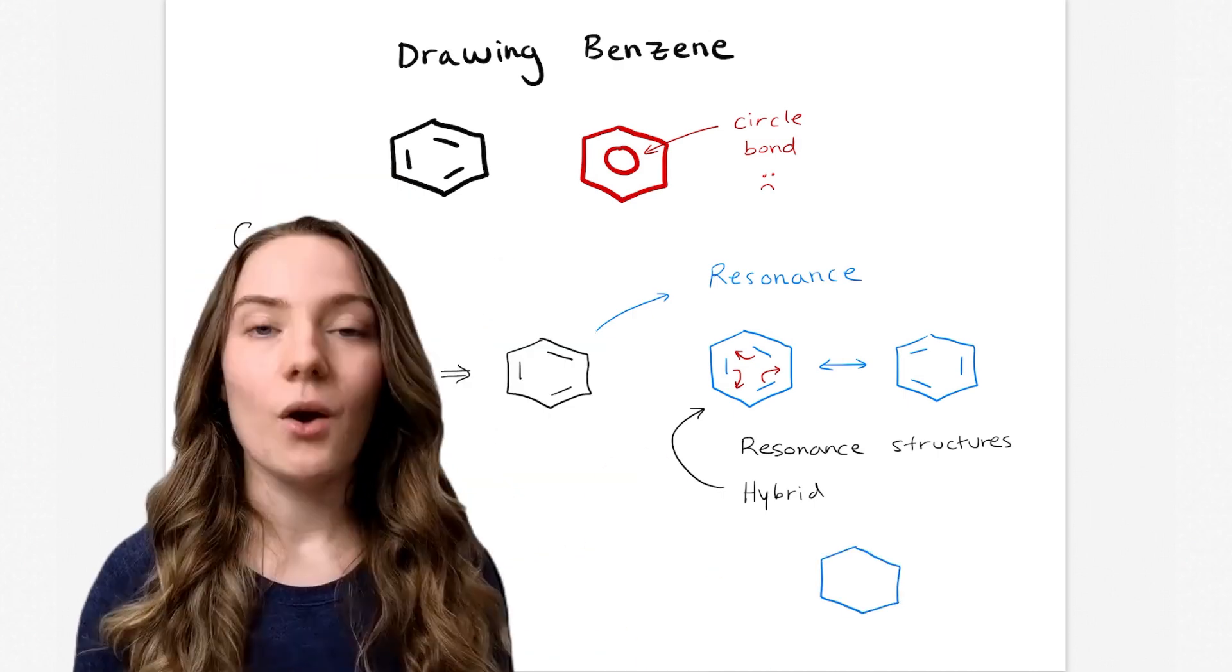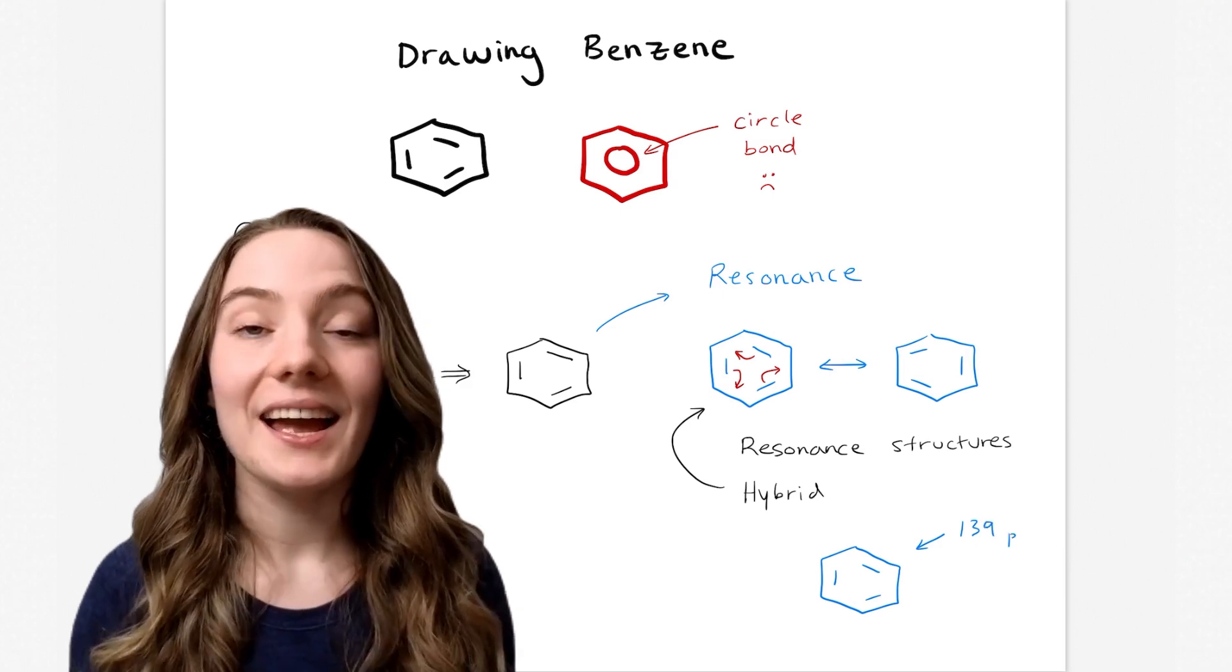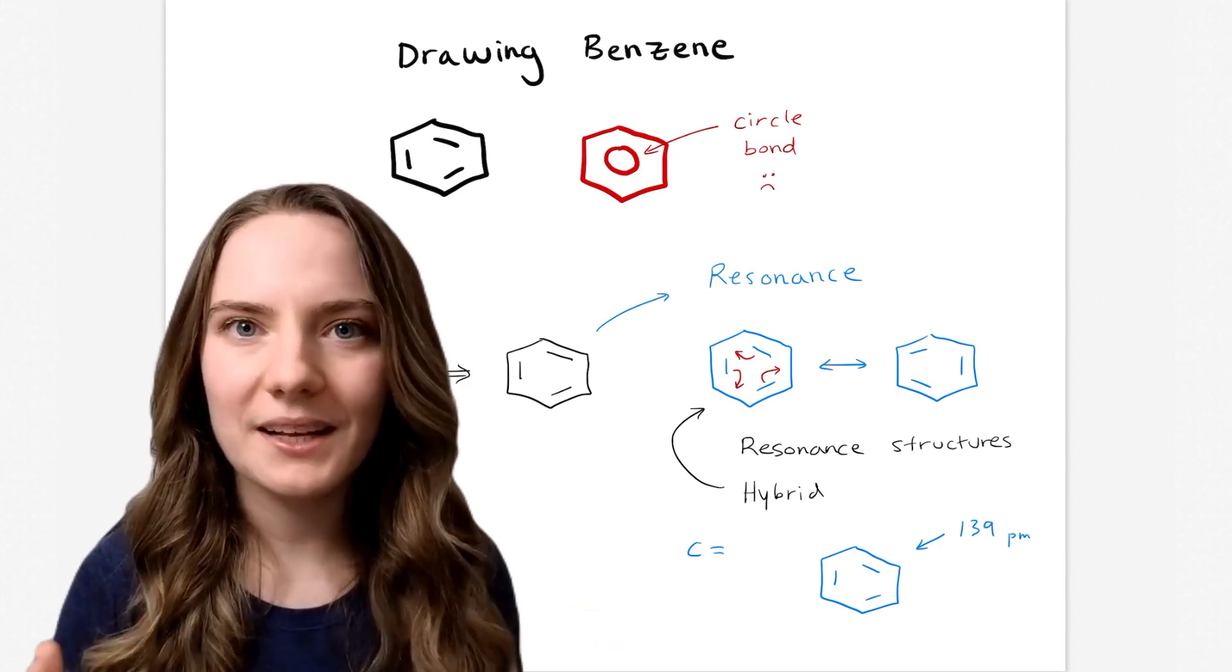So how do I know this? Well all the bonds in benzene are of equal length. And that's how we form this hexagon structure. But how does this make sense?